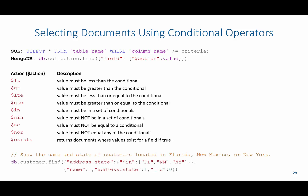For example, if I wanted to show the name and state of customers located in Florida, New Mexico, or New York, I'd say db.customer.find, then in the selector criteria look for address.state, then open a curly bracket and use the $in operator with Florida, New Mexico, and New York. To display only name and state, I'd include name: 1 and address.state: 1, then exclude the ID with 0.